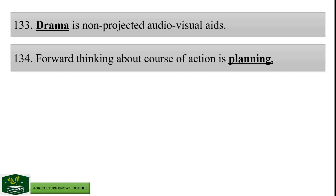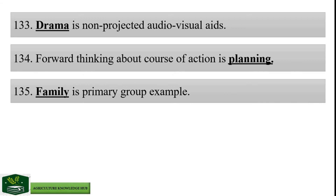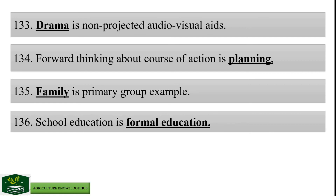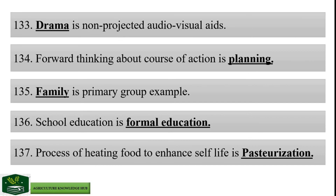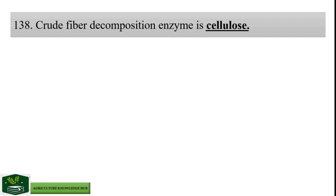Forward thinking about course of action is planning. Family is a primary group example. School education is formal education. Process of heating food to enhance shelf life is pasteurization. Crude fiber decomposition enzyme is cellulase. Mating between related animals is inbreeding.